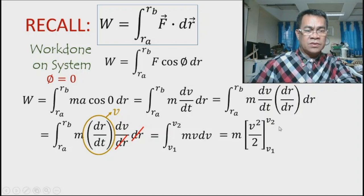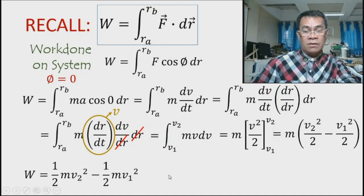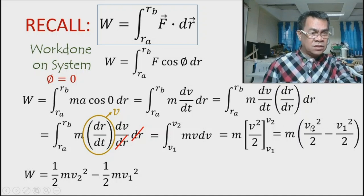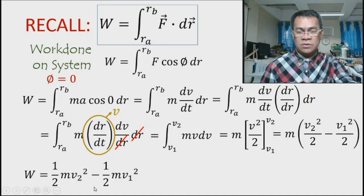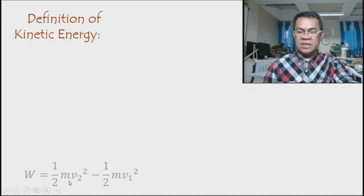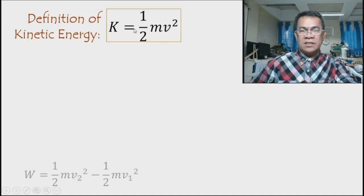Mass doesn't change. Integrating v dv gives v²/2. Applying the limits, this becomes mv₂²/2 minus mv₁²/2. Distributing mass, the work done on the system equals ½mv₂² minus ½mv₁². Notice both terms have the same form: ½mv², and the definition of kinetic energy is KE = ½mv².